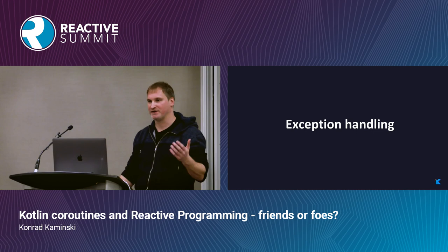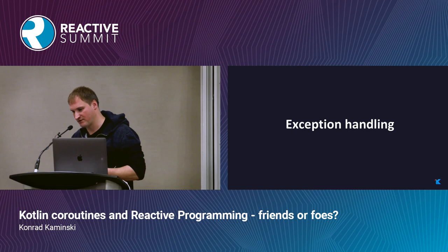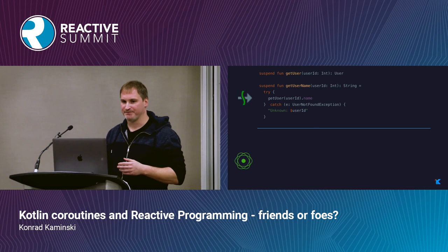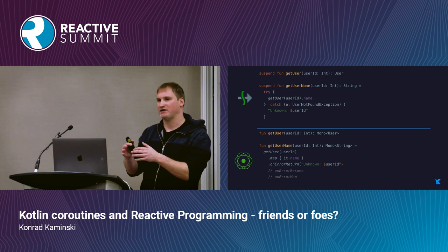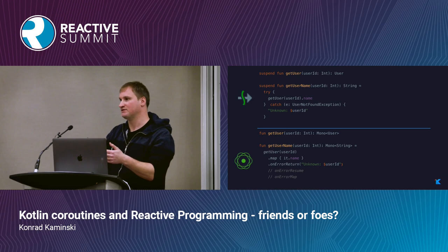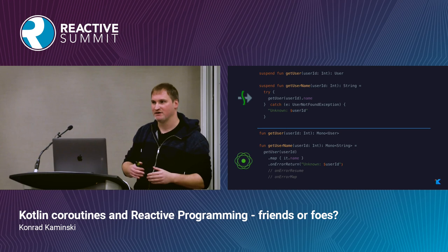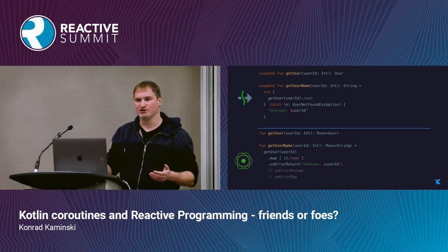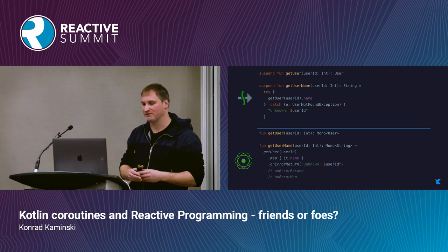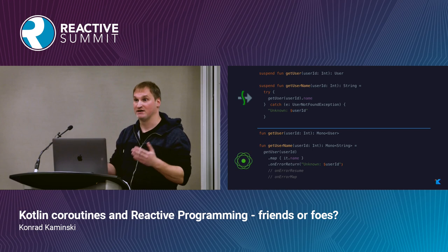Now, exception handling. With coroutines we use regular language constructs — just try-catch, like normal. With Reactor we have to use one of the operators created for handling exceptions. For example, onErrorReturn specifies the value returned if an exception is thrown in your pipeline. We can also use other operators like onErrorResume or onErrorMap for different scenarios. The problem is you have to know all those operator names and what they do, whereas with coroutines you don't have to learn anything new.